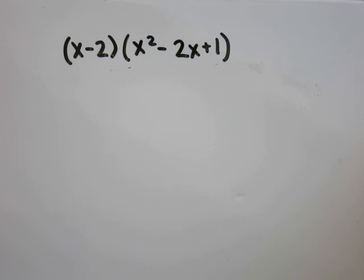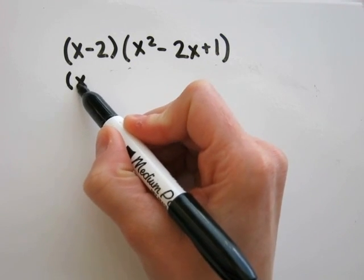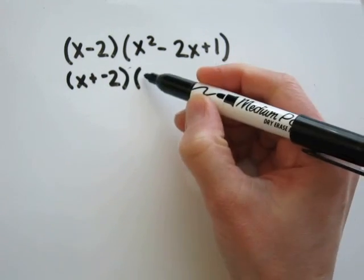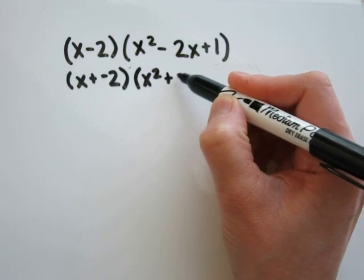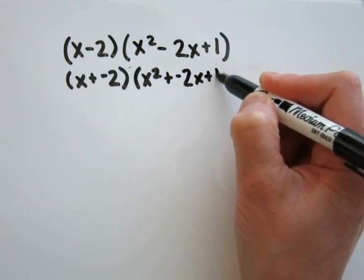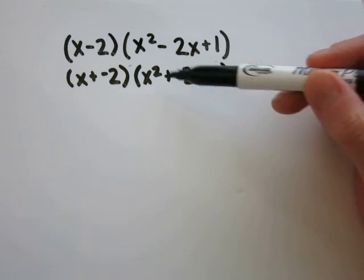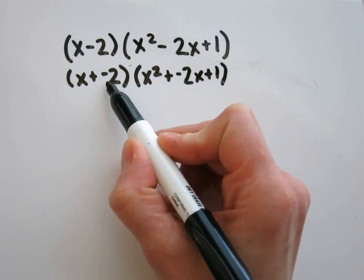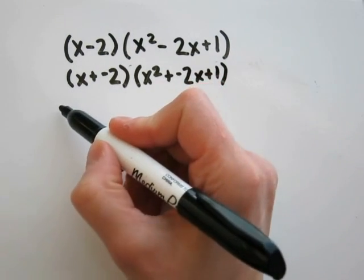Problem 19: x minus 2 times x squared minus 2x plus 1. My first step will be to rewrite the problem. With my subtraction sign, I don't want to confuse my signs, so x minus 2 becomes x plus negative 2, and x squared minus 2x plus 1 becomes x squared plus negative 2x plus 1. I can't use FOIL because I have three numbers in this parentheses, and FOIL only works when you have two numbers in each parentheses. So I'm going to take x times each number and then negative 2 times each number, writing this out long to make sure I get all my numbers multiplied.